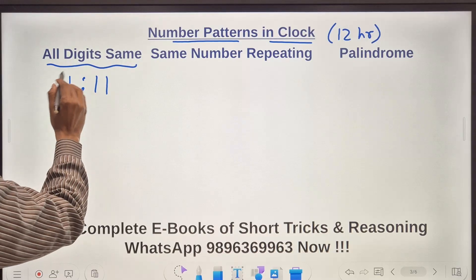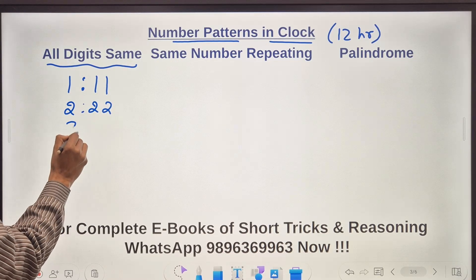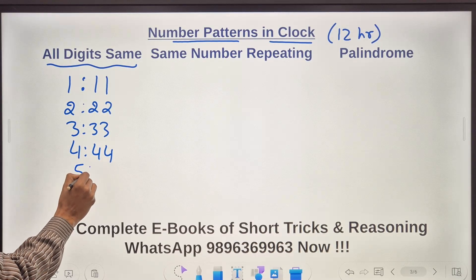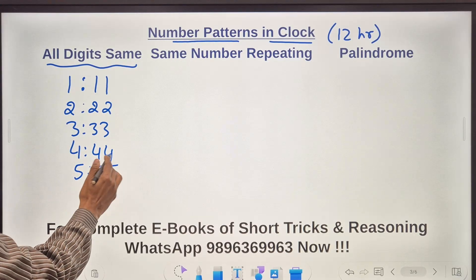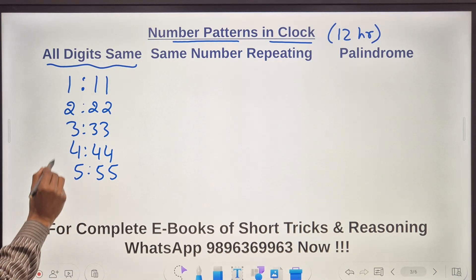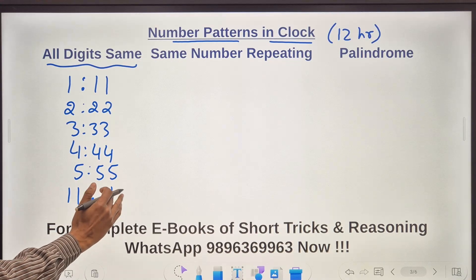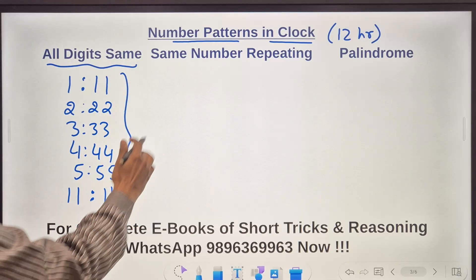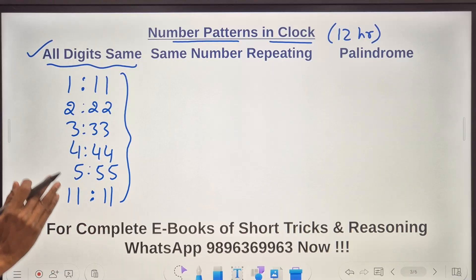So 1:11, likewise 2:22, 3:33, 4:44, 5:55 and we don't have a 6:66 because 66 minutes is not valid time. After that we directly have the repetition in 11:11. So how many times? It is only 6 times during a 12 hour period that you get all digits same in the time.